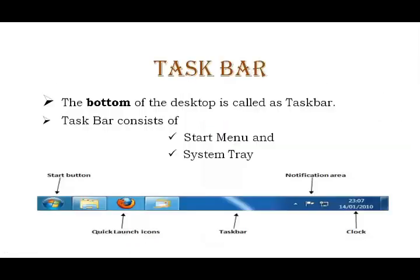Next, the task bar. The bottom of the desktop is called the task bar. The task bar consists of two parts: the start menu and the system tray.